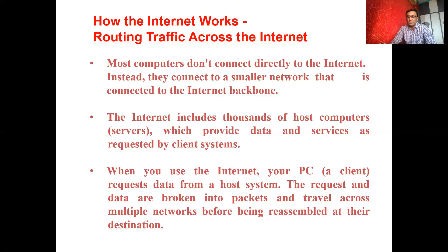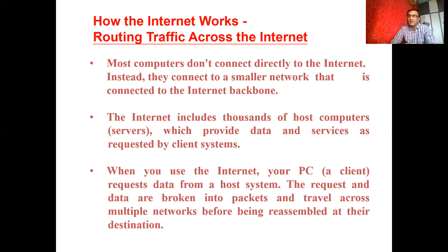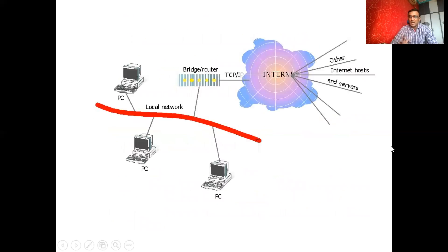Whether we want broadband or fibernet, the pricing depends on the type of speed and data we want. The price for 2G is not much, but as we increase our speed, the tariff rates go up. When you use the internet, your PC requests data from a host system. The request and data are broken into packets and travel across multiple networks before being reassembled at their destination. The internet is connected through TCP/IP and then bridge routers, sent to the local network and connected to PCs.